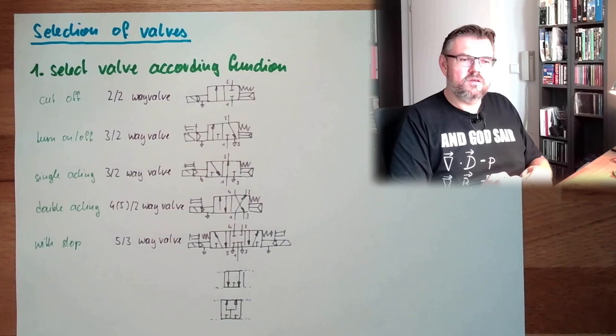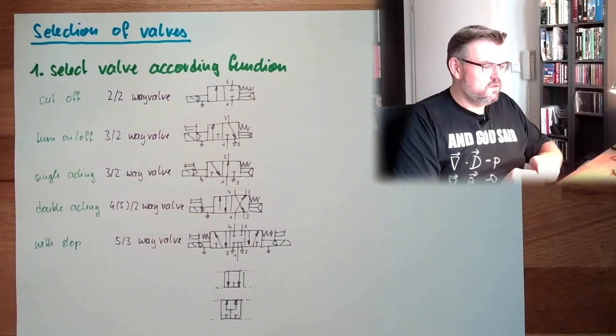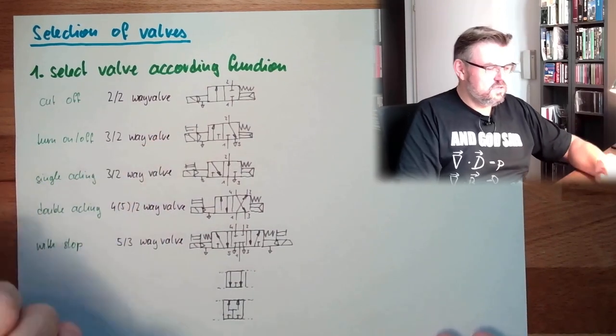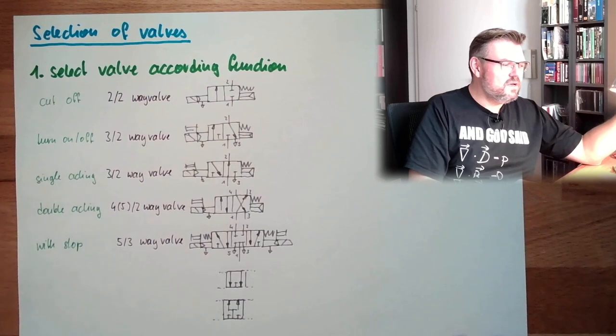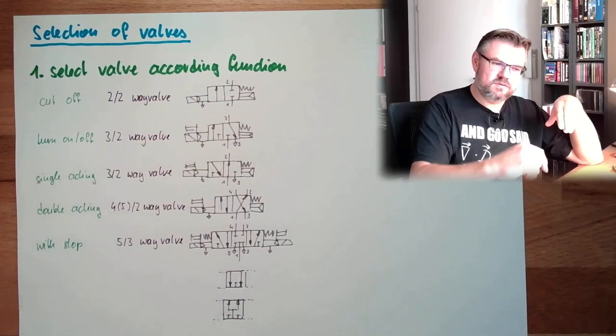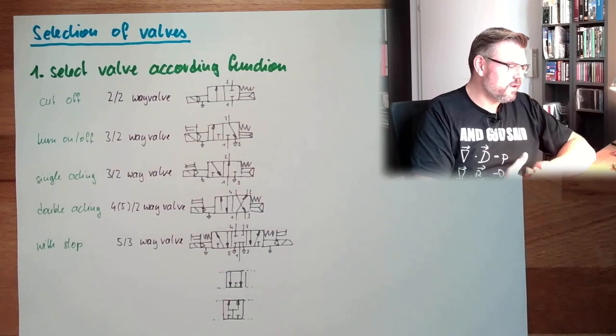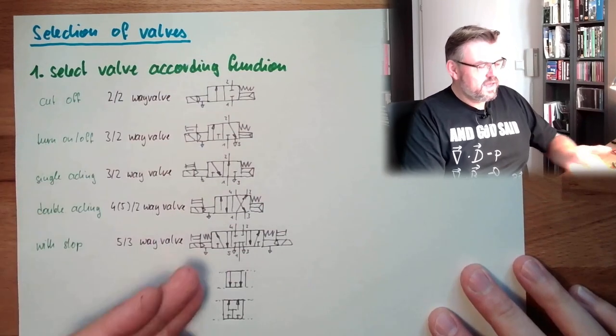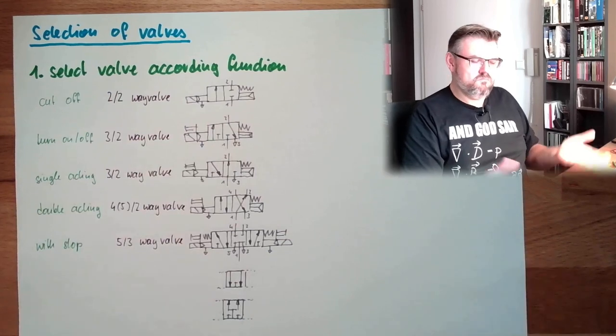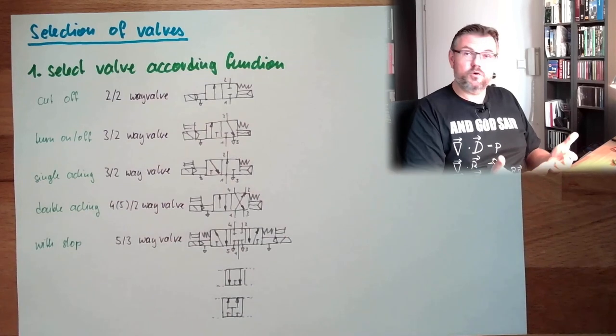This is why these manual operations are usually there. Hydraulic valves, you usually have to have a stick and move it. And here it's even in pneumatic valves, it's usually built in somewhere with a small button somewhere. So this is the first thing you do. We know the function, we select the according valve, then that's it. And then we open the catalog of a manufacturer of our choice.